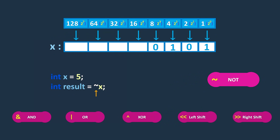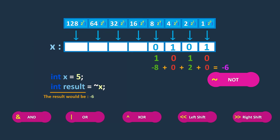The NOT operator performs a unary operation that inverts the bits of its operand. It returns the 1's complement of the operand. In this example, the binary representation of the result is 0101, because each bit of x is flipped — the original 0's become 1's and 1's become 0's. In 2's complement representation, the leftmost bit is a sign bit. If it's 0 the number is positive, and if it's 1 the number is negative. In 0101, the leftmost bit is 1, indicating that the number is negative. Therefore, the decimal value of the result is -6.